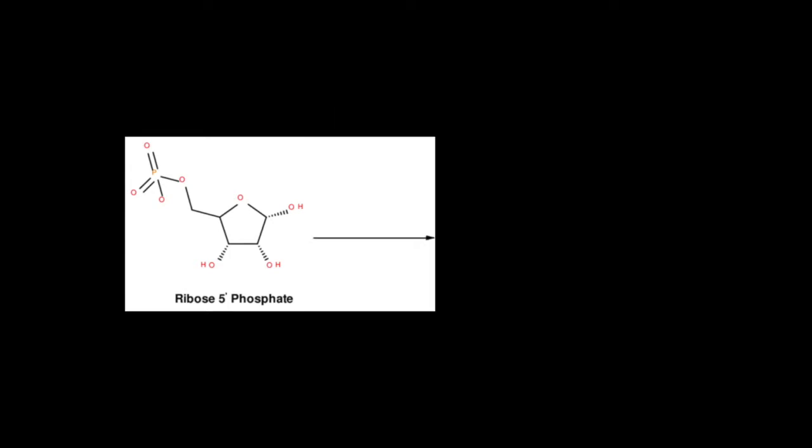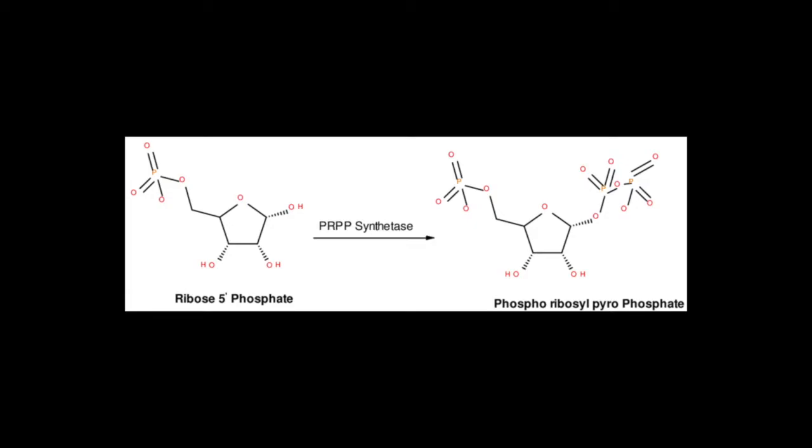First off, the production of ribose 5-phosphate from the pentose phosphate pathway gets converted into PRPP by PRPP synthetase.